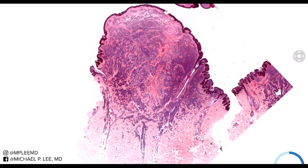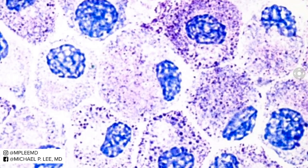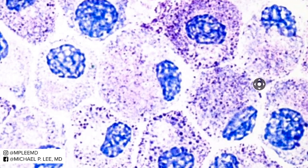Let's review what the mast cell looks like. The mast cell has round nuclei, oftentimes dead center in the middle of the cell. Occasionally they can be displaced along the side, like a plasma cell. The characteristic feature is that they have metachromatic or purplish granules, and these granules contain both histamine and heparin. Histamine is one of the main mediators of the allergic response, and heparin is an anticoagulant.